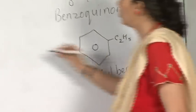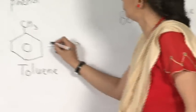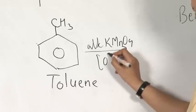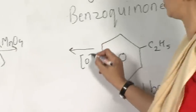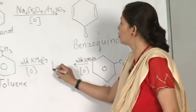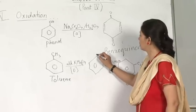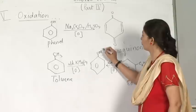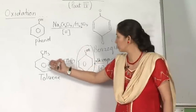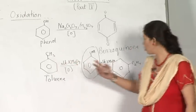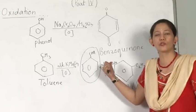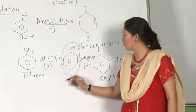If I react these with alkaline KMnO4 under oxidation, I am going to get benzoic acid — whether it is one carbon atom or two carbon atom alkyl group attached to the benzene ring, or even three carbon atoms. These undergo oxidation in presence of alkaline KMnO4 to give benzoic acid.